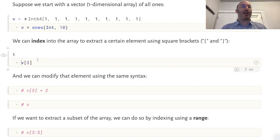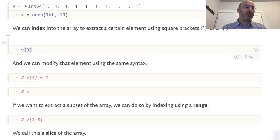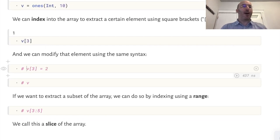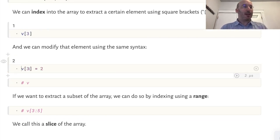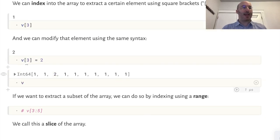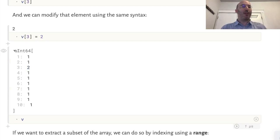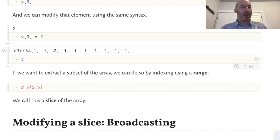We know we can index into that array, extract one element using square brackets. Square brackets 3 gives the third element since Julia starts indexing at 1. We can modify the array using the same square brackets. v indexed at the third element equals 2 assigns the value 2 to that element, and we see that v has changed.